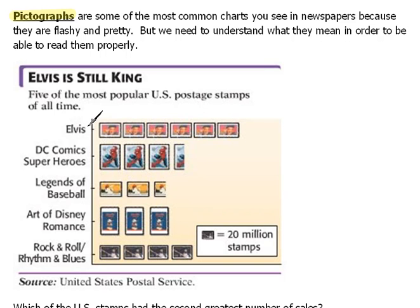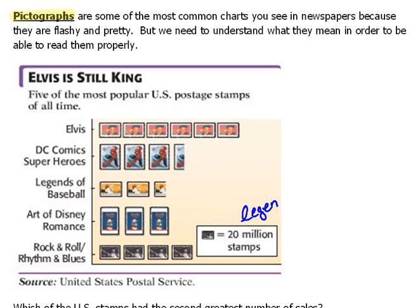The stamps shown are Elvis stamps, Superhero stamps, Legends of Baseball, Art of Disney Romance, and Rock and Roll and Rhythm and Blues stamps. Each icon represents a certain amount, and down at the bottom we have what's called a legend — that's what tells you how much each one of those icons represents.